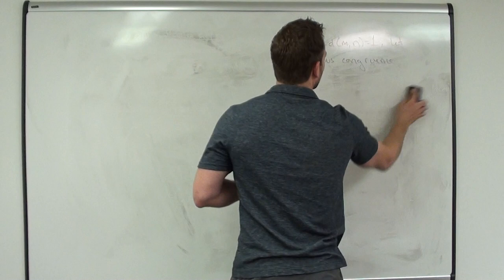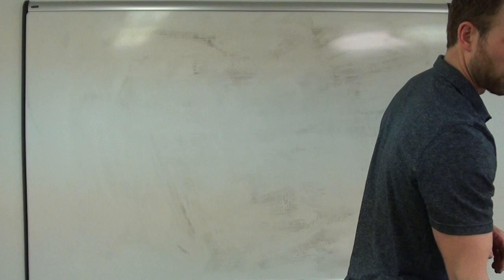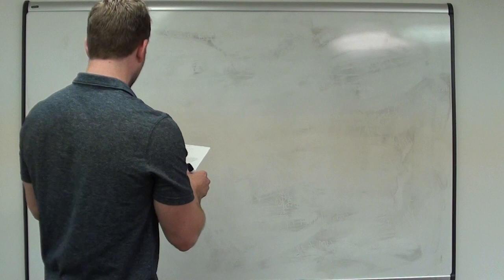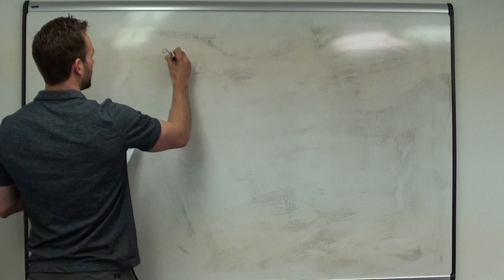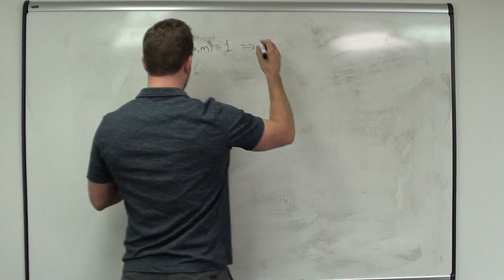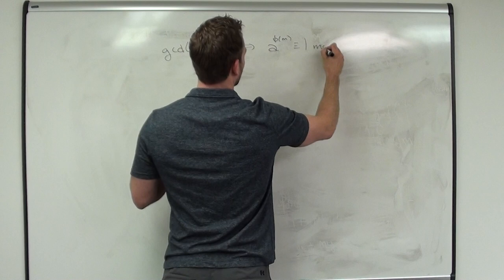Before we get to that theorem, we've got a little bit of stuff to remind us about why we're getting to where we're at. Remember Euler's theorem: if the GCD of a and m is 1, then a to the phi(m) is congruent to 1 mod m. That was Euler's theorem — the generalization of Fermat's little theorem that we did last time.